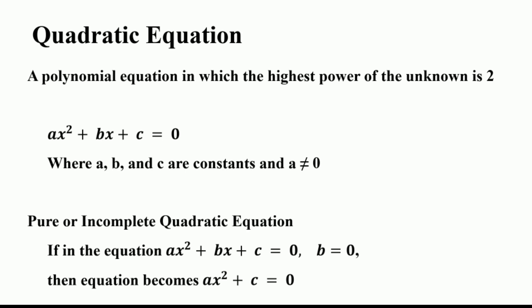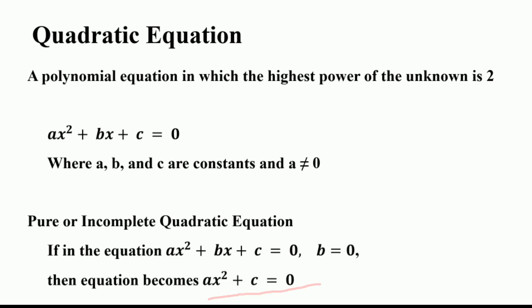A complete quadratic equation contains terms with non-zero coefficients of the second and first power of the unknown. We also have a pure or incomplete quadratic equation: if in ax squared plus bx plus c equals 0, b is equal to 0, then the equation becomes ax squared plus c is equal to 0. This is called a pure quadratic equation — one in which the first degree term has a zero coefficient.